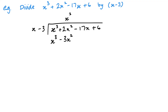Just like with normal long division, we subtract to find the remainder. So we do x cubed minus x cubed, and 2x squared minus negative 3x squared. I like to change the sign of these and then add — I find that quicker and easier. That gives me 0 and 5x squared, then I bring the next term down.